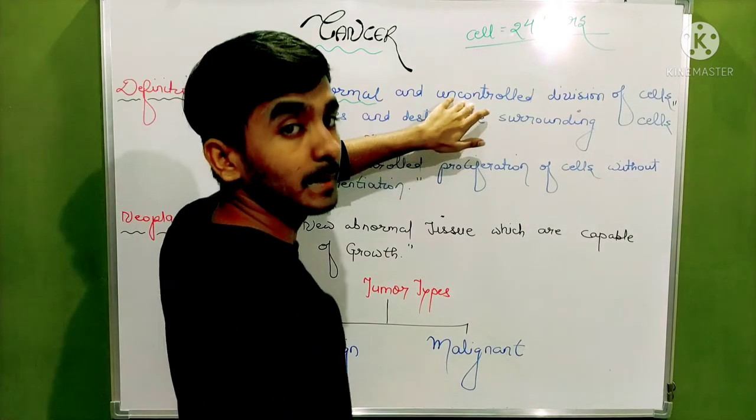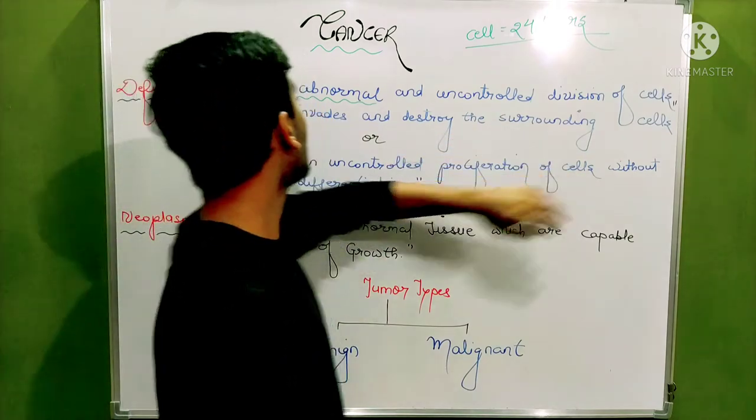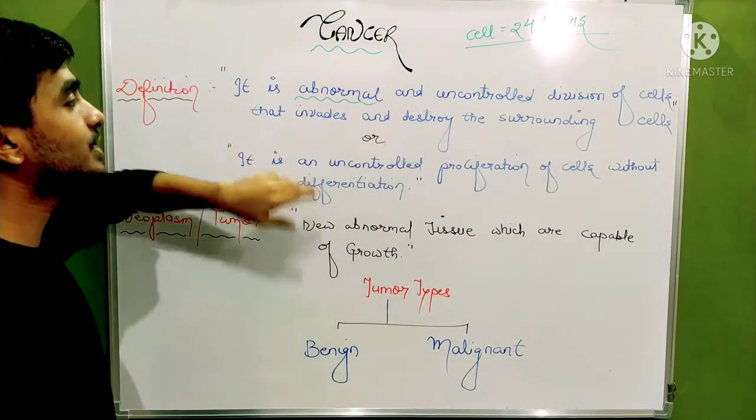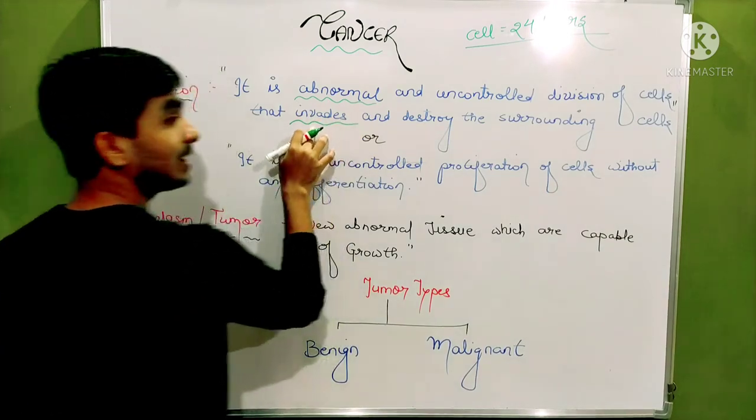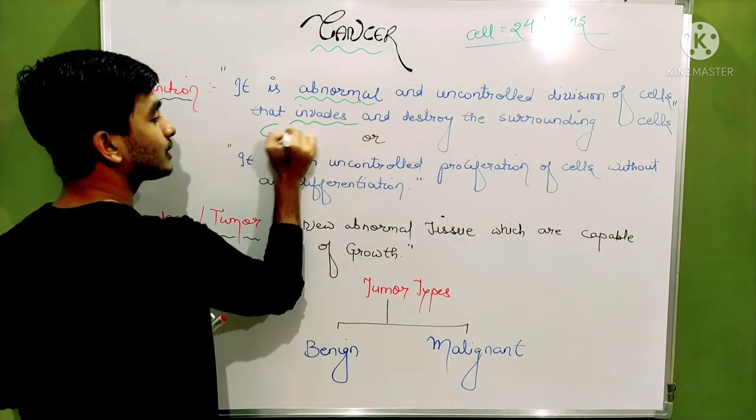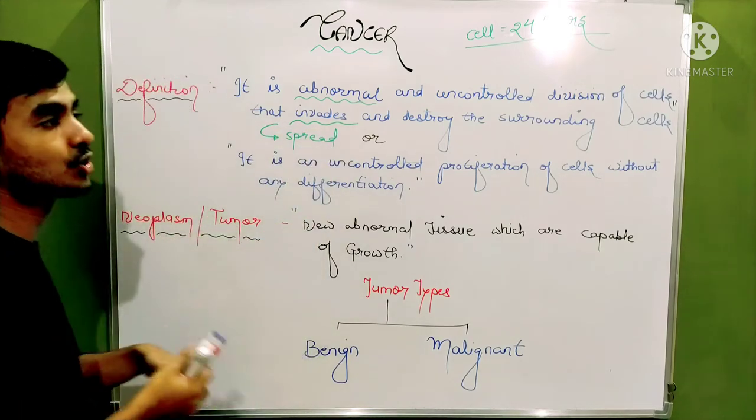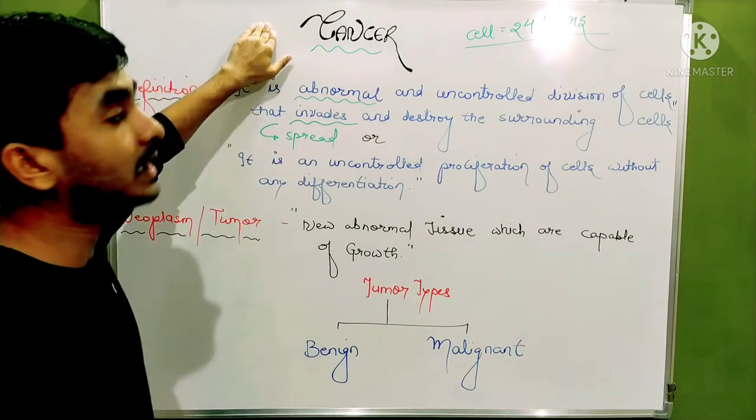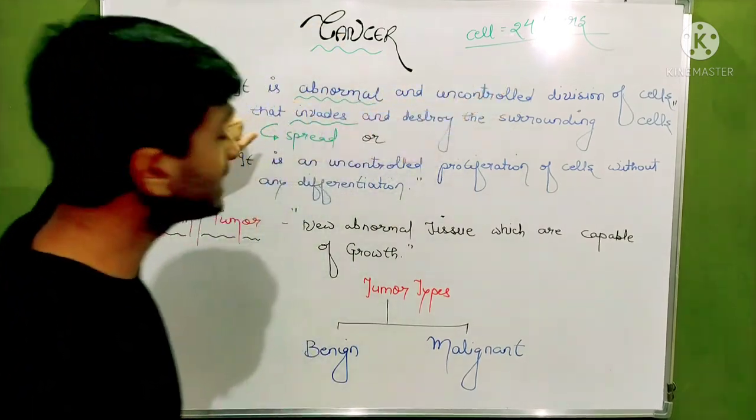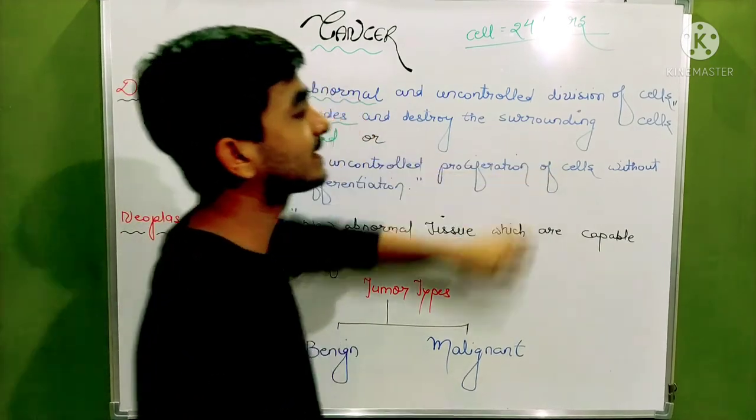And why is it uncontrolled? Because once it started, it cannot be stopped. That's why it is an abnormal and uncontrolled division of cells that invades, or invades. Invades means they will start to spread to corresponding areas and then destroy the surrounding cells. They will abnormally and uncontrollably grow and then start to spread into the surrounding and destroy the nearby cells and tissues.